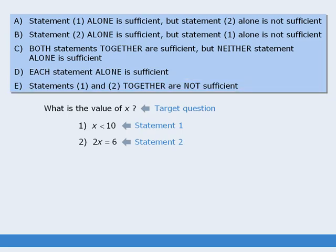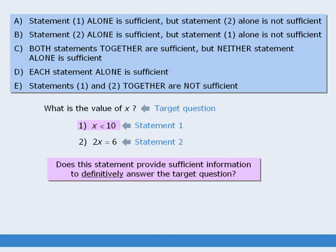Now let's answer this particular question. The target question asks us to find the value of x. We'll begin with statement 1, which tells us that x is less than 10. Does statement 1 provide sufficient information to definitively, without a doubt, answer the target question? The answer is no. Statement 1 tells us that x can equal any number less than 10 — x might equal 8, or 2, or 3.7, and so on. Since statement 1 does not provide sufficient information, we will say that this statement is insufficient.